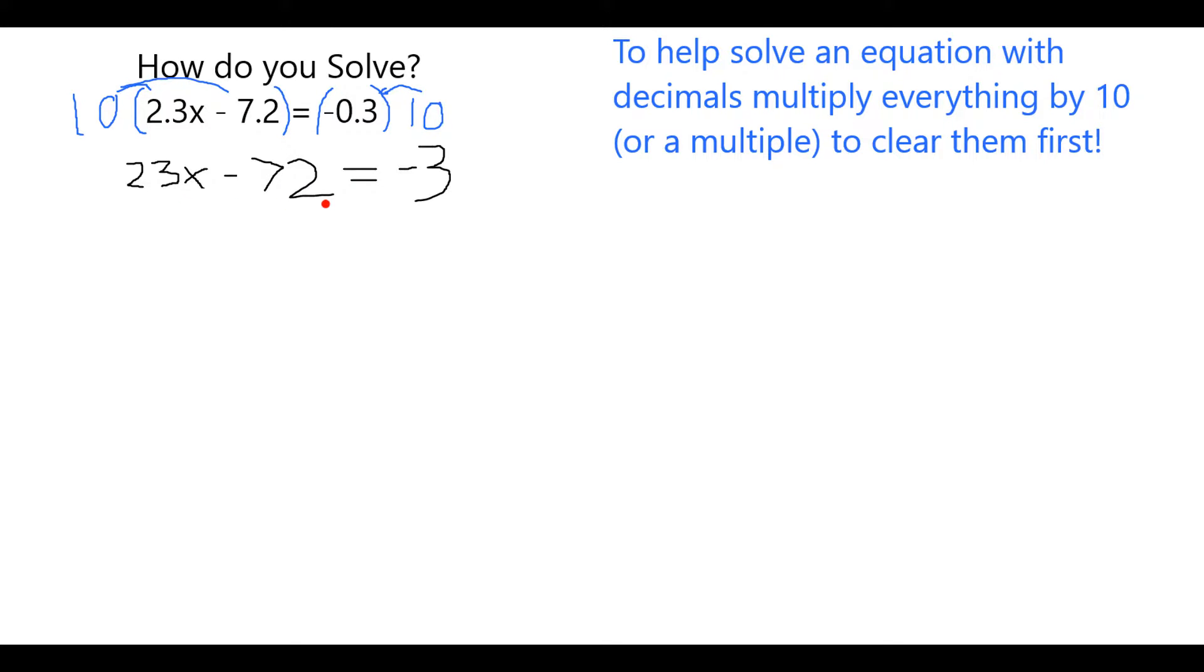By multiplying everything by 10, I now have an equivalent equation. That means the same answer for x, but no longer involves decimals.